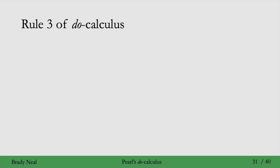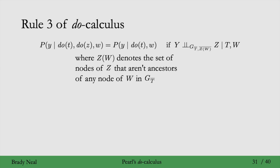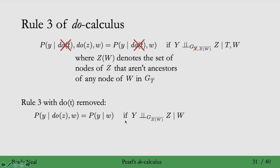The final rule — rule three — is the trickiest. We'll spend a bit more time on this one. Rule three uses Z(W), which denotes the set of nodes of z that aren't ancestors of any node of w in the manipulated graph. To understand the intuition, consider the special case where t is the empty set: if y is d-separated from z by w in the graph where we remove incoming edges to z, then we can remove the intervention on z, so P(y | do(z), w) = P(y | w).